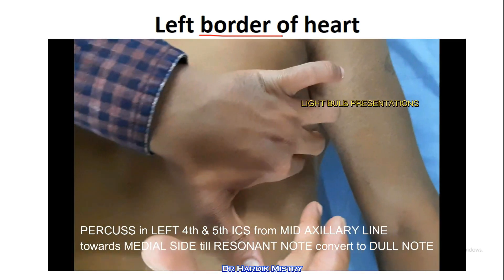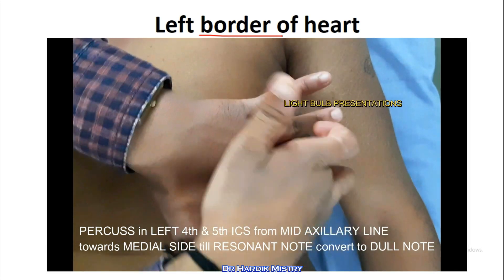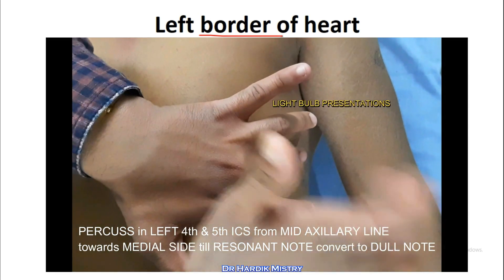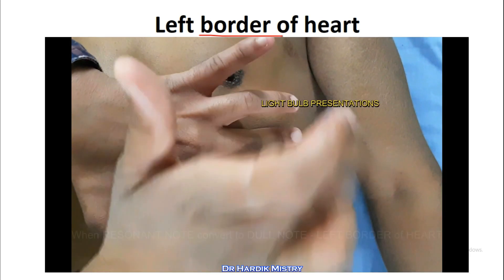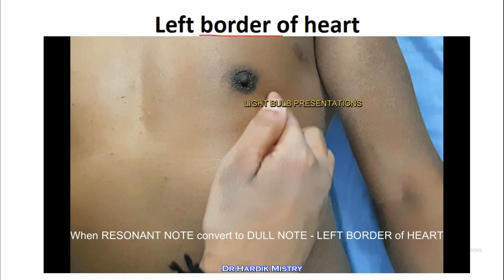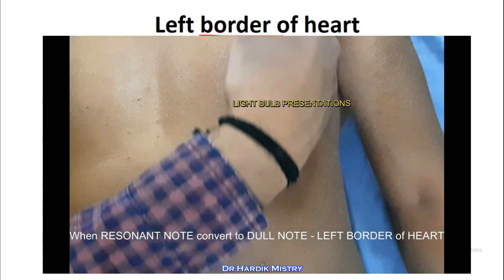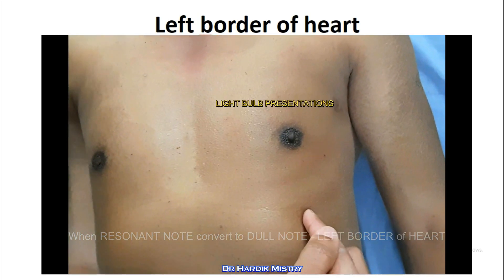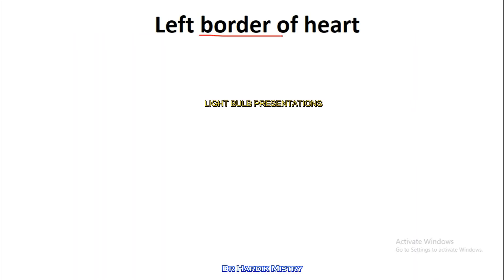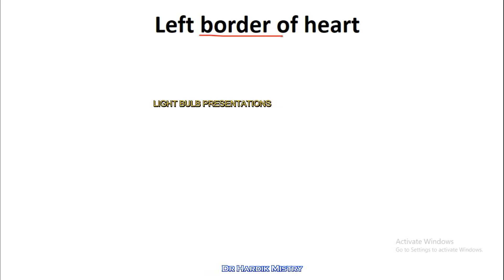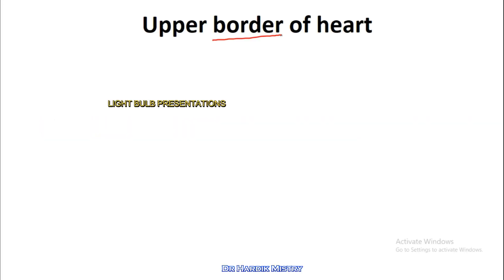Now move towards the medial side — in the mid-axillary line you will hear the resonant note, but whenever the heart is coming you will find the dull note. Whenever the resonant note is converted to the dull note, that is the left border of the heart. This is mostly present at the level of the apex beat, which is mostly present at the left fifth intercostal space, just inner to the mid-clavicular line.